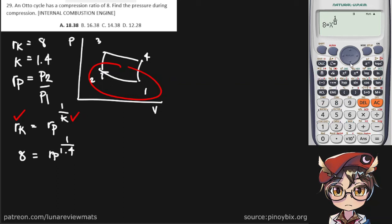And 1 over 1.4. Quick and dirty shift solve. And that's it. We get a pressure ratio of 18.38. And that is our final answer. That's A.